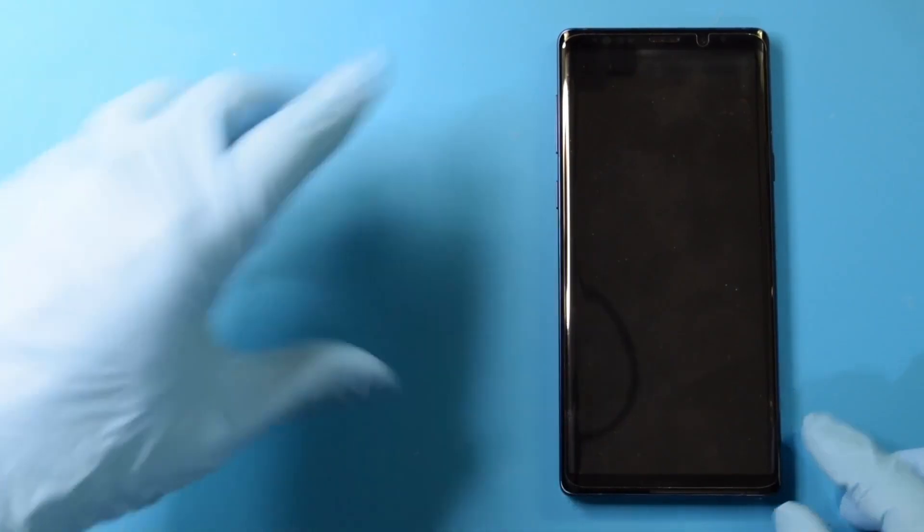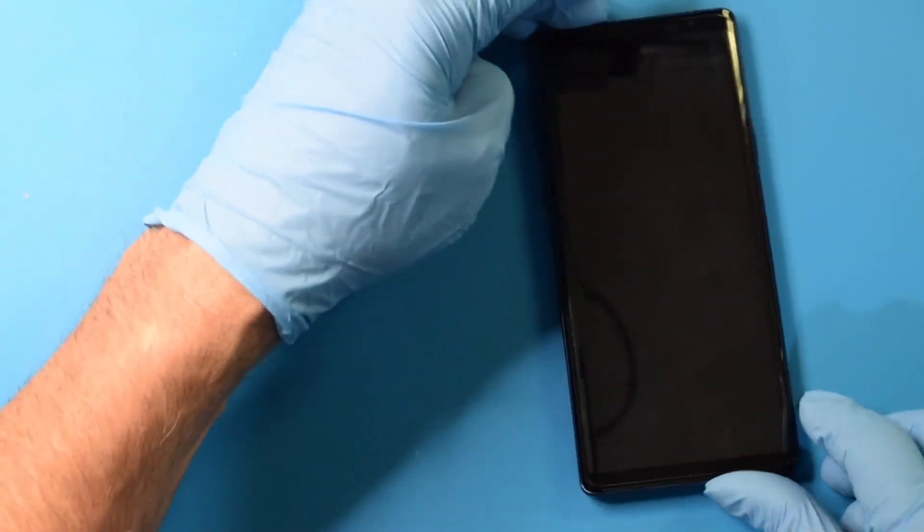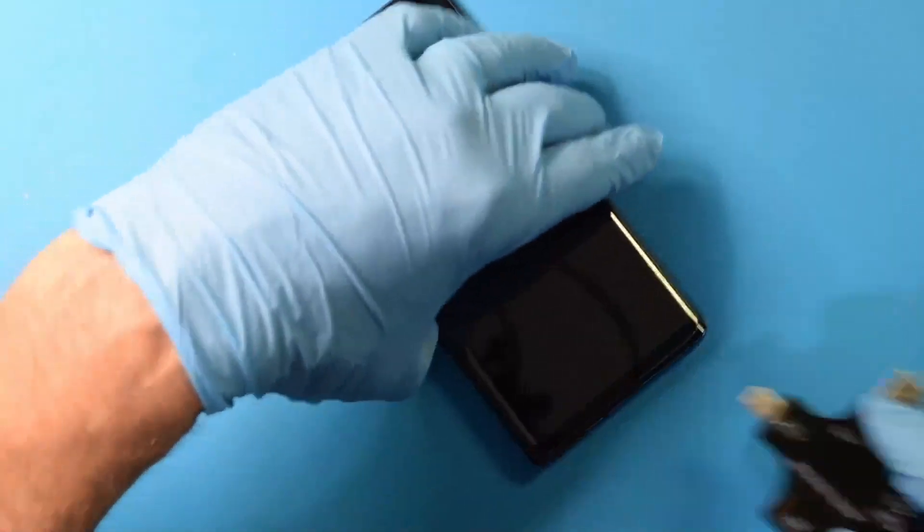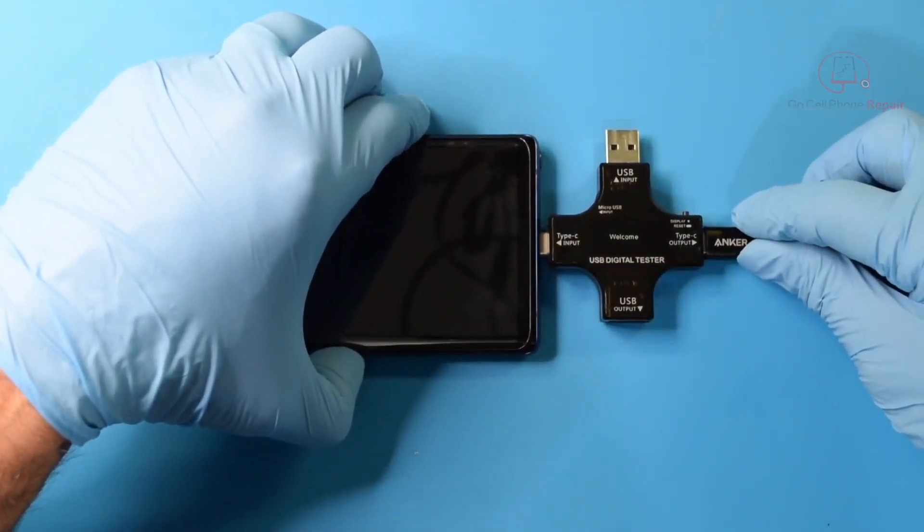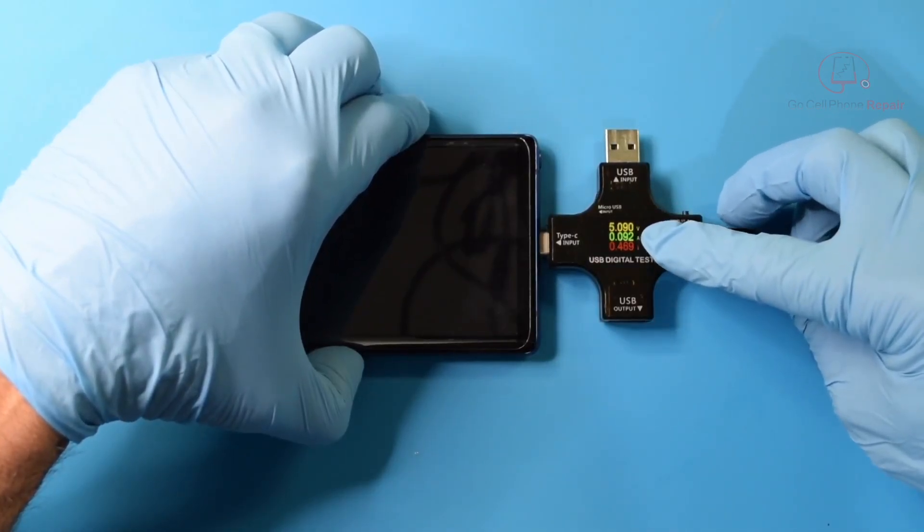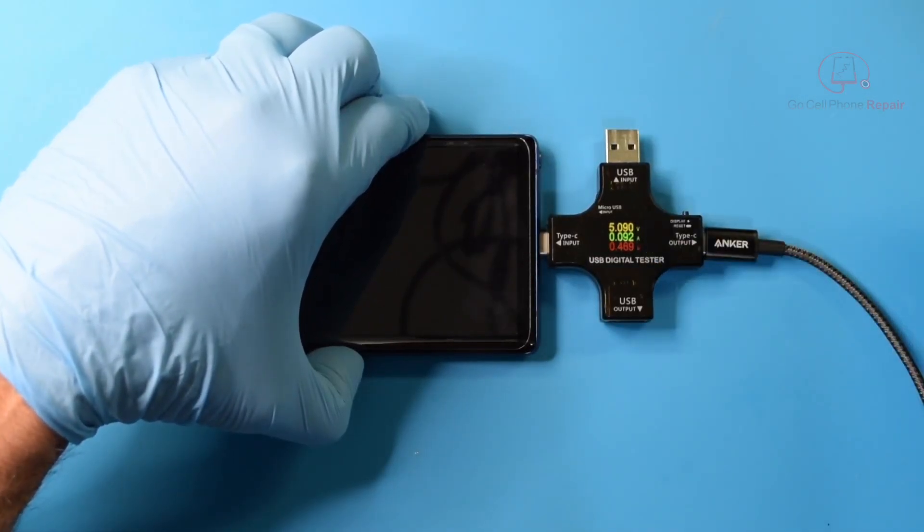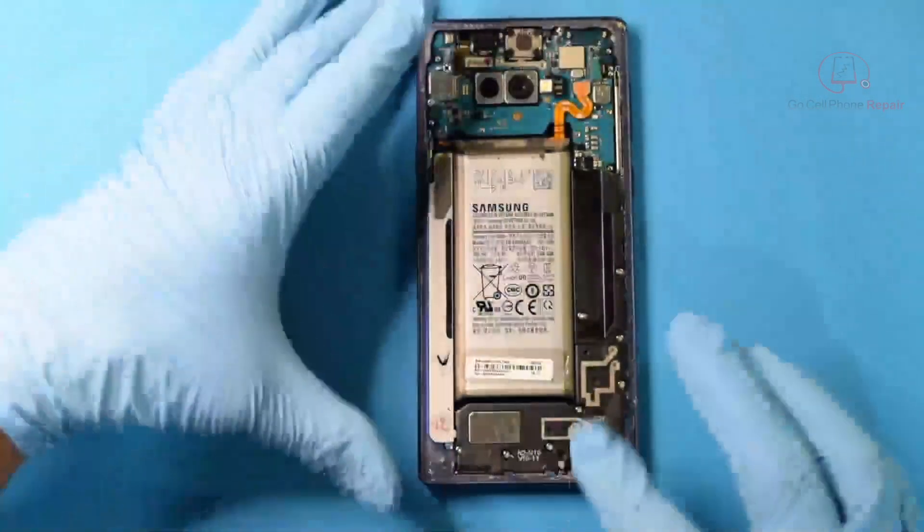Today we have a Galaxy Note 9 that is not turning on. When we plug it into our meter, it stays at 5 volts and is pulling about 0.09 amps. I've already taken the back panel off in this upper area.